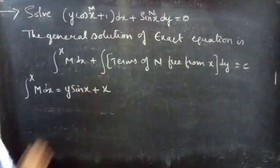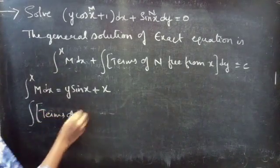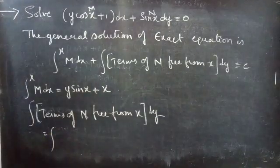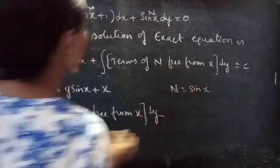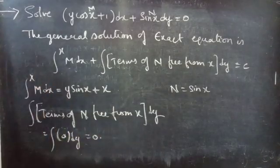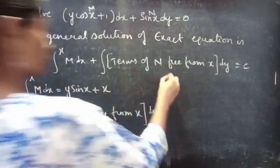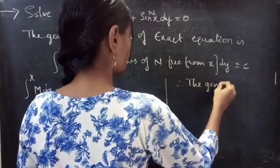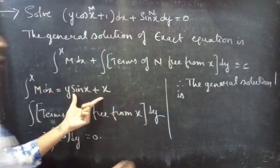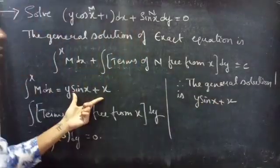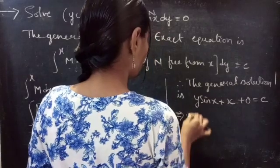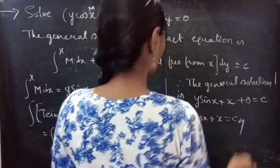Now consider the second integral: the integral of terms of N free from x dy. Here N = sin x. There is no term which is free from x, so we take it as ∫0 dy = 0. Therefore the general solution is: (y sin x + x) + 0 = c, which gives y sin x + x = c as the required general solution.